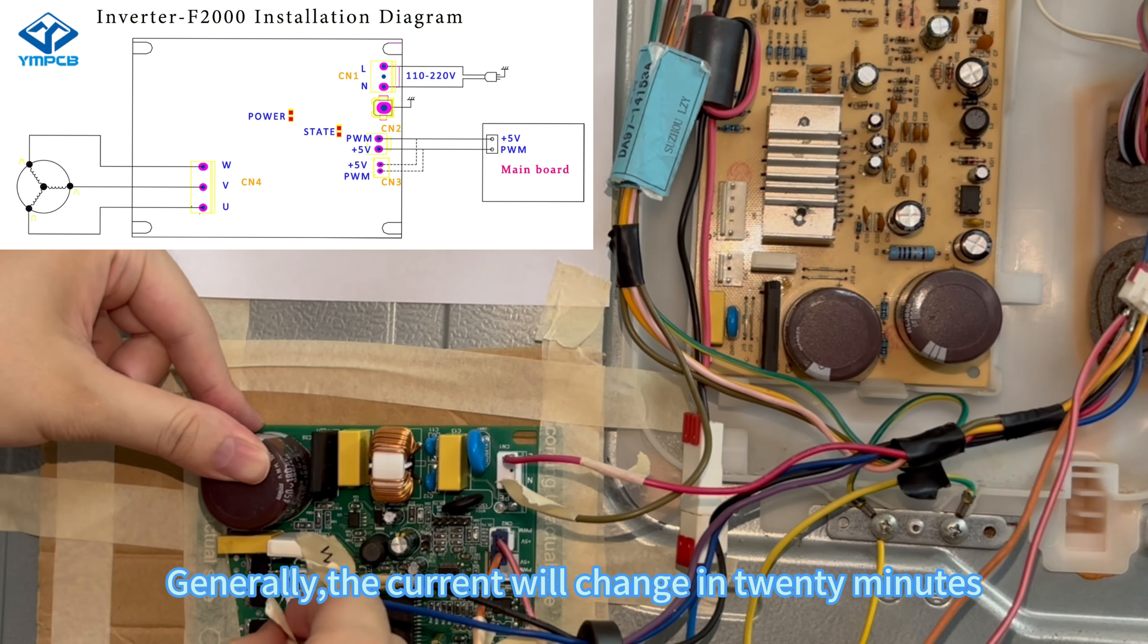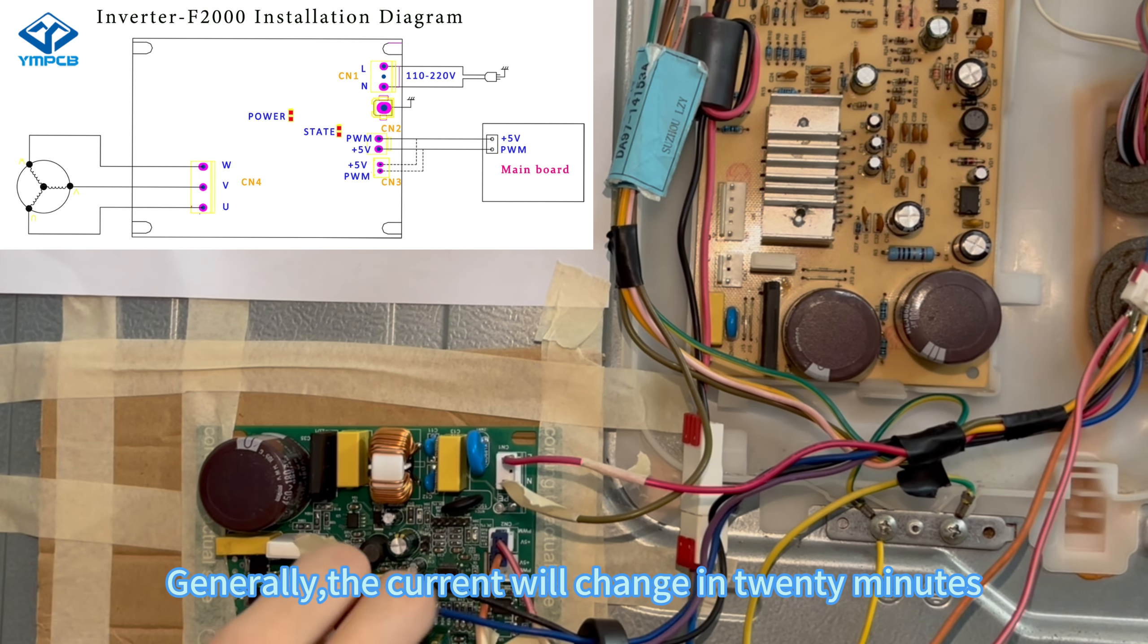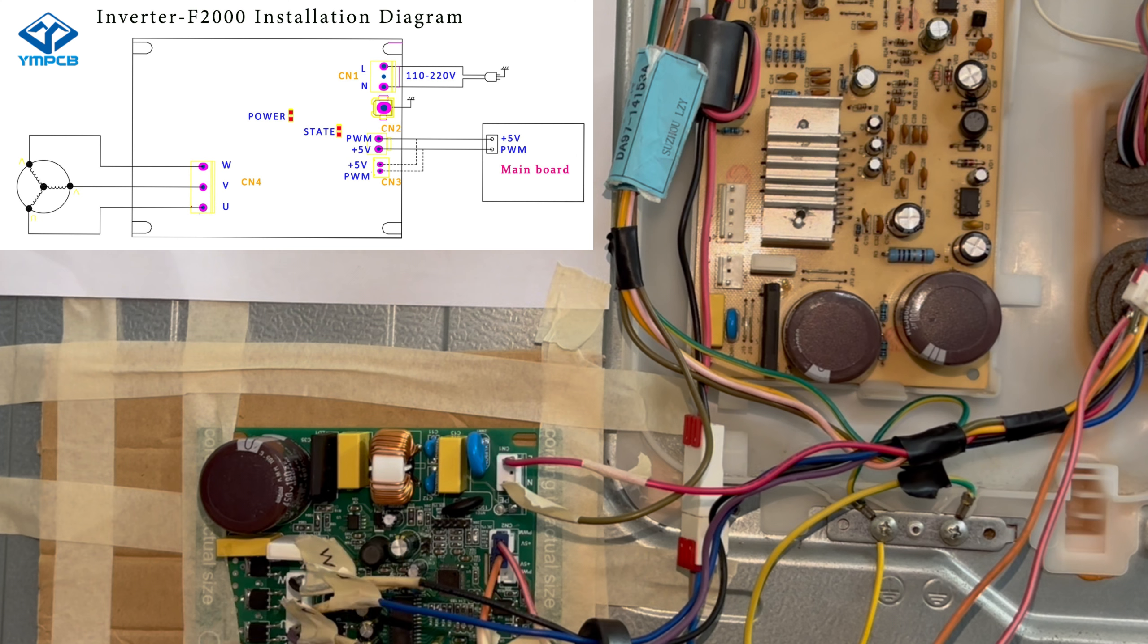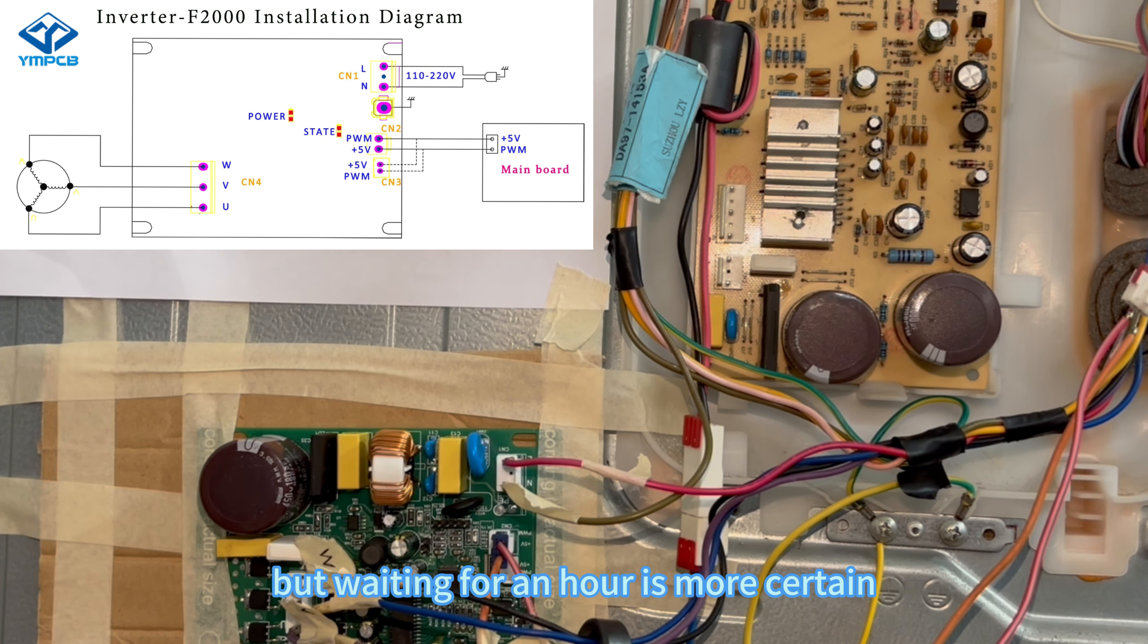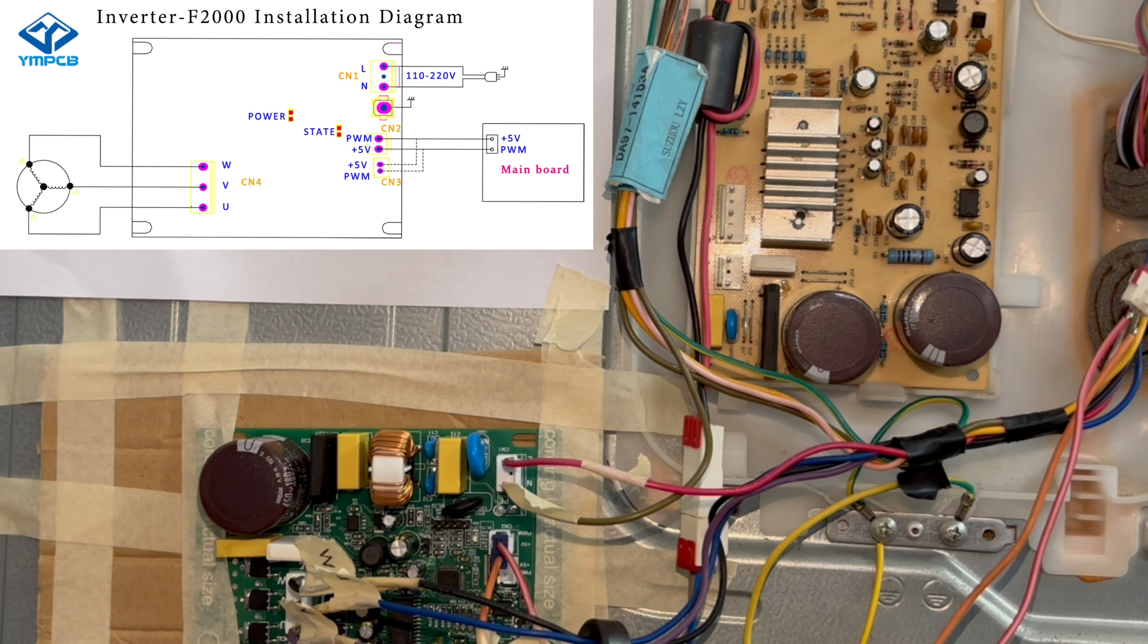Check the current to ensure that the compressor does not burn out. Generally, the current will change in 20 minutes, but waiting for an hour is more certain.